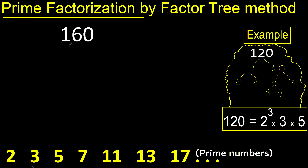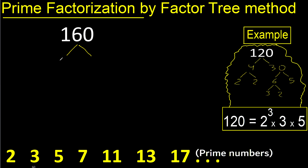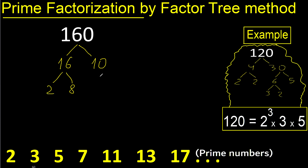Prime factorization. Find 2 numbers that multiply to give 160. 16 multiplied by 10 is 160. Now break these down: 16 is 2 multiplied by 8, and here 2 multiplied by 5 is 10.